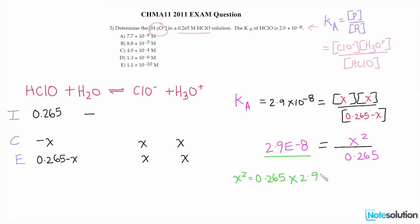And so it follows that x is going to be the square root of this entire value. And this value turns out to be 7.7 times 10 to the power of negative 9. And the square root of this value turns out to be 8.8 times 10 to the power of negative 5.